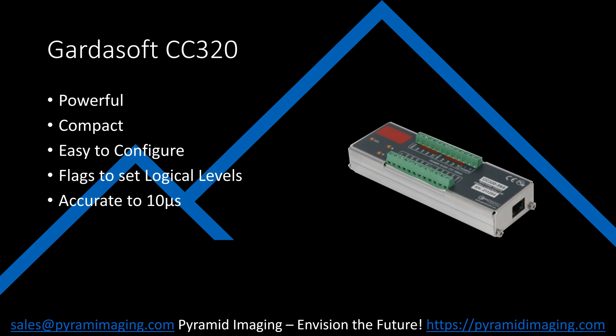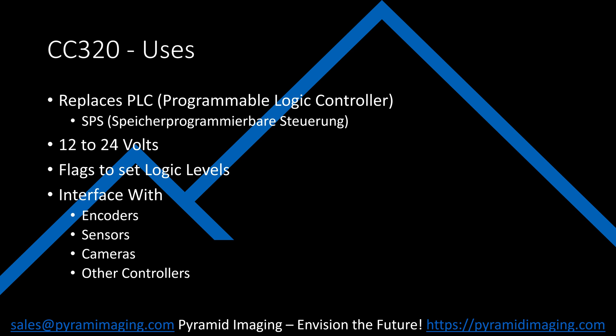The CC320 can operate on 12 to 24 volts. The CC320 was designed to replace a PLC, Programmable Logic Controller, with a much easier setup and interface. It can be used to interface with encoders, sensors, cameras, and even other controllers.